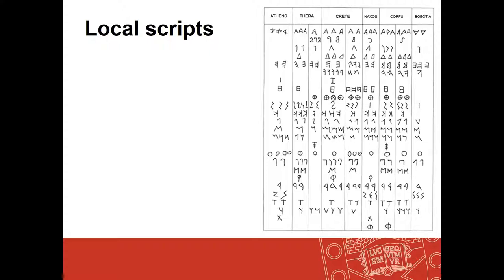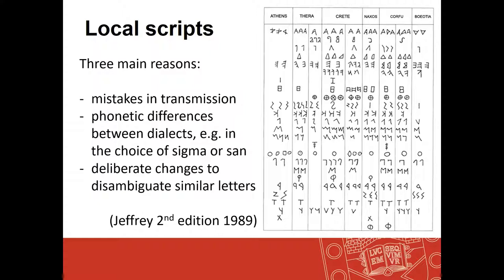Luraghi notes that Geoffrey's classic work, The Local Scripts of Archaic Greece, gives three potential reasons for this pattern of differences. Firstly, mistakes in transmission — imagining perhaps that a single person or small group might be responsible for introducing the alphabet to a polis, and any errors made would be incorporated into the official alphabet of the city over time. Secondly, phonetic differences between dialects — the choice of letter shapes or included letters, particularly the choice between sigma or san as the main sibilant sign. And thirdly, deliberate changes to disambiguate similar letters from each other, where one city might make two characters more distinct while another city might not, or might do it differently.